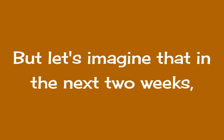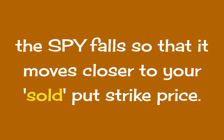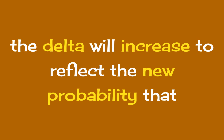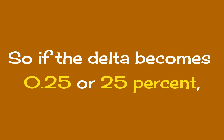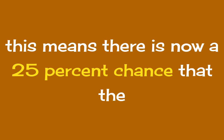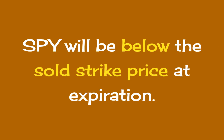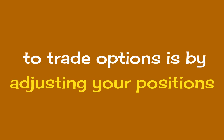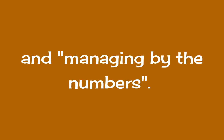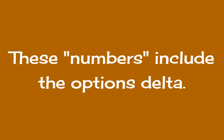But let's imagine that in the next two weeks the SPY falls so that it moves closer to your sold put strike price. In this case, the delta will increase to reflect the new probability that the SPY will close below your exercise price at expiration date. So if the delta becomes 0.25 or 25%, this means that there is now a 25% chance that the SPY will be below the sold strike price at expiration. Some say that the best and safest way to trade options is by adjusting your positions and managing by the numbers, and these numbers include the options delta.